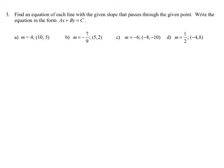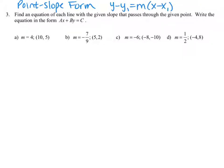Find an equation of each line with the given slope passing through the given point, and write the equation in standard form ax plus by equals c. Since we're given a slope and a point, we use the point-slope form: y minus y₁ equals m times (x minus x₁), where (x₁, y₁) is the given point and m is the slope. For part a, the slope is 4 and the point is (10, 5).